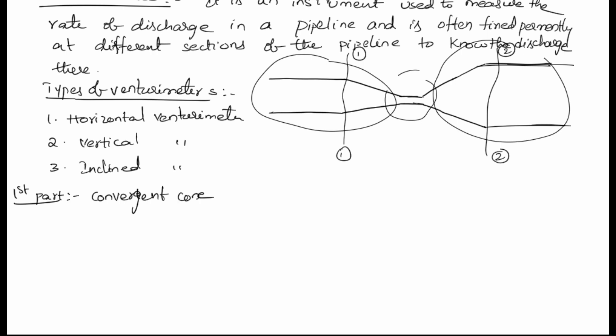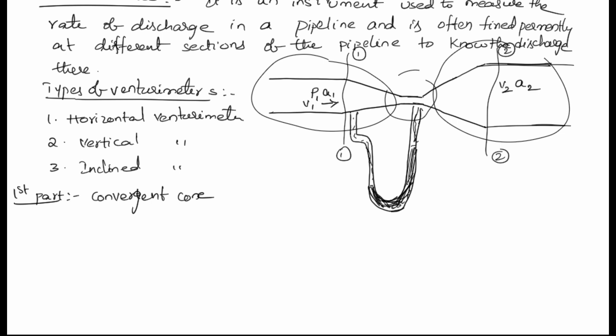In order to calculate the rate of discharge, we keep a manometer to calculate the pressure head at section two. The pressure at the convergent cone is p1, the area is a1, and the velocity is v1. At section two, the velocity is v2, the area is a2, and the pressure is p2.